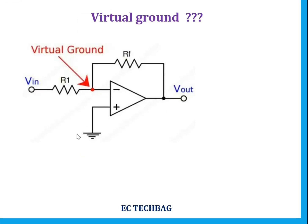Here is an inverting operational amplifier. The input is applied to the inverting terminal and the non-inverting terminal is grounded. Here the potential is V1 and here the potential is V2. By the virtual short concept, these two potentials are equal — that is, V1 is approximately equal to V2.